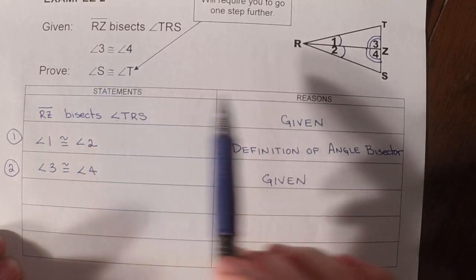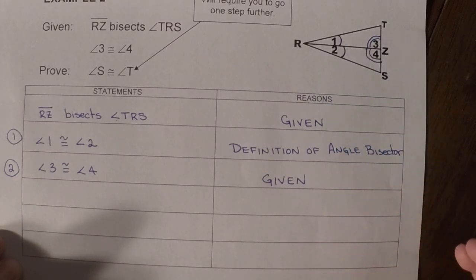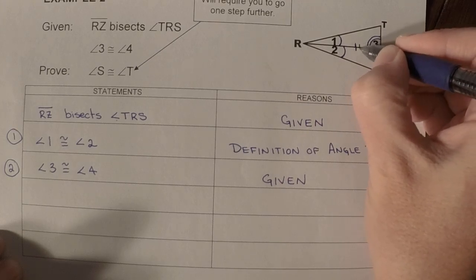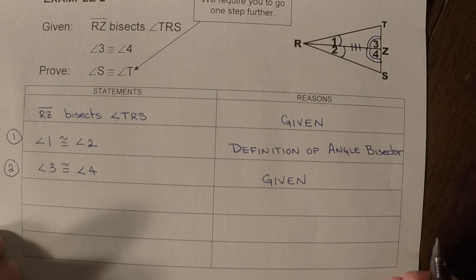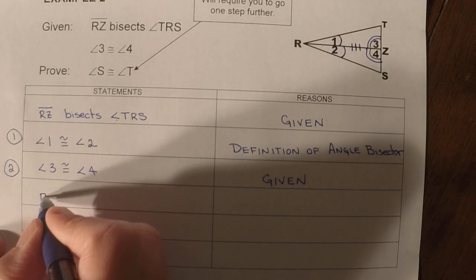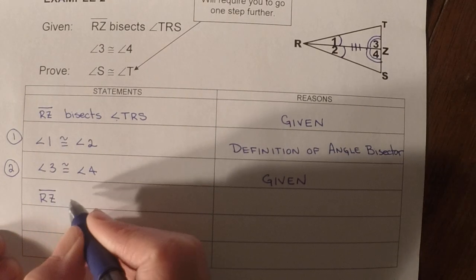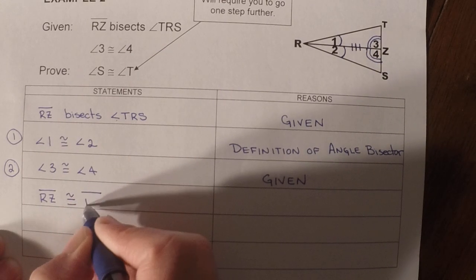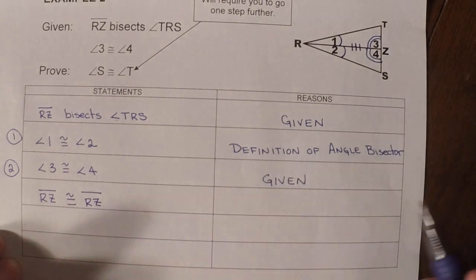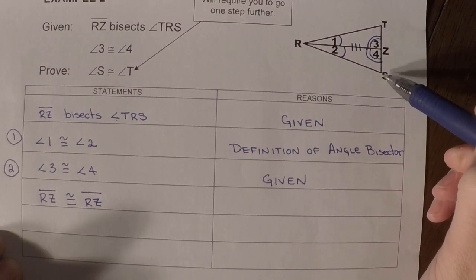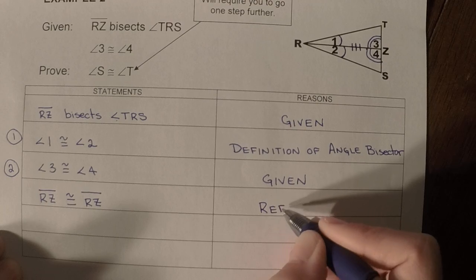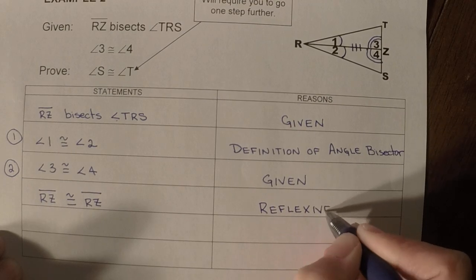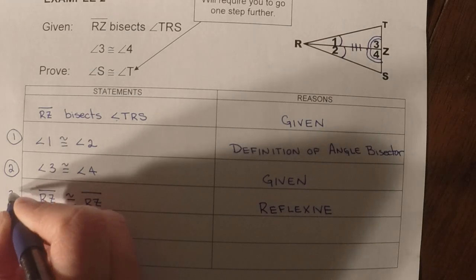So now we would need to go back and look for vertical angles, shared side, or shared angle. In this case, we do have a shared side right here in the middle. So on this, we would say RZ is congruent to RZ. And if we were to flip this triangle down, they would be going in the same order. So then here we would just put reflexive.